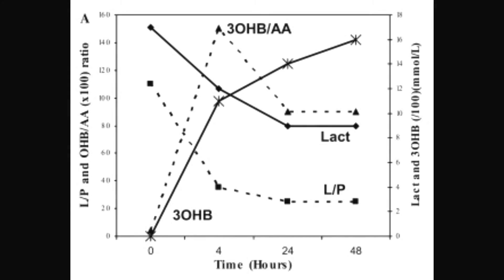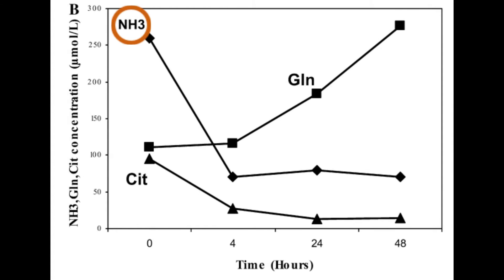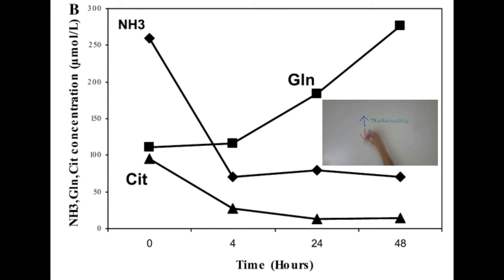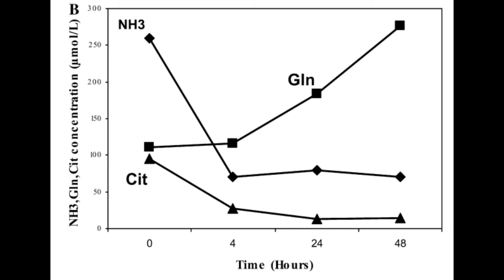As early as 4 hours after the initial dose of triheptanoin, there was a dramatic improvement in lactic acid levels — decreasing from about 0.17 mmol per liter before treatment to around 0.12 mmol per liter just after 4 hours. The ratio of lactate to pyruvate also decreased. Triheptanoin was also able to decrease plasma ammonia by indirectly increasing oxaloacetate levels, enhancing transamination and decreasing deamination for regeneration of alpha-ketoglutarate. Plasma ammonia levels decreased from about 250 µmol per liter to just about 60 µmol per liter in just 4 hours of treatment.